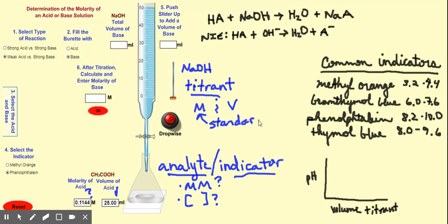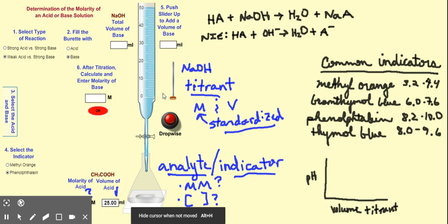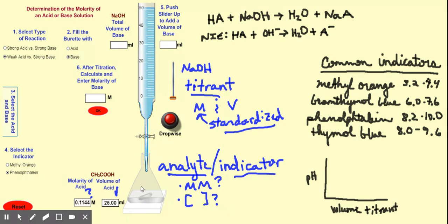When we know the molarity of the titrant, we call that a standardized solution — meaning we know the exact molarity of that titrant. For double-period students, we'll actually make our own sodium hydroxide solution and standardize it ourselves in a separate lab. The indicator I'm using in this simulation is phenolphthalein, which is a weak acid and changes color upon donating its proton.